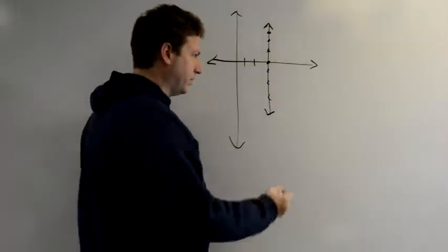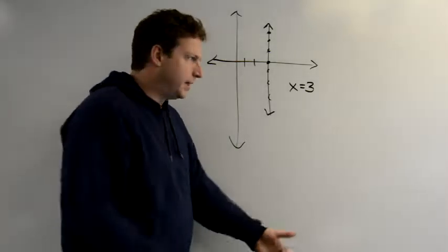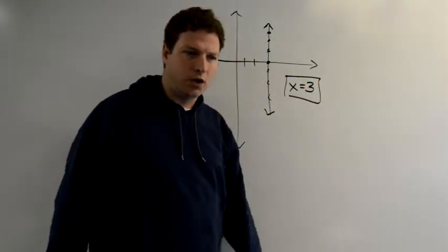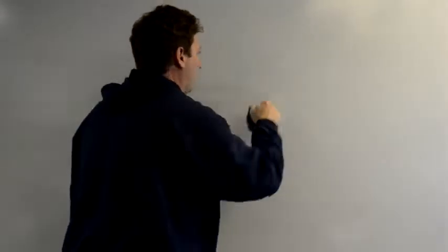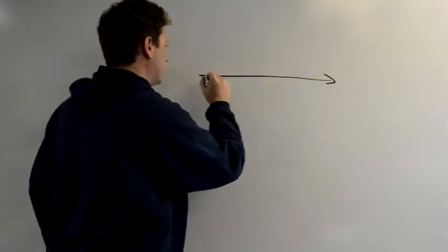Let's say this is 1, 2, 3. If that's x equals 3, well x always equals 3. So I might see this representing a vertical line.